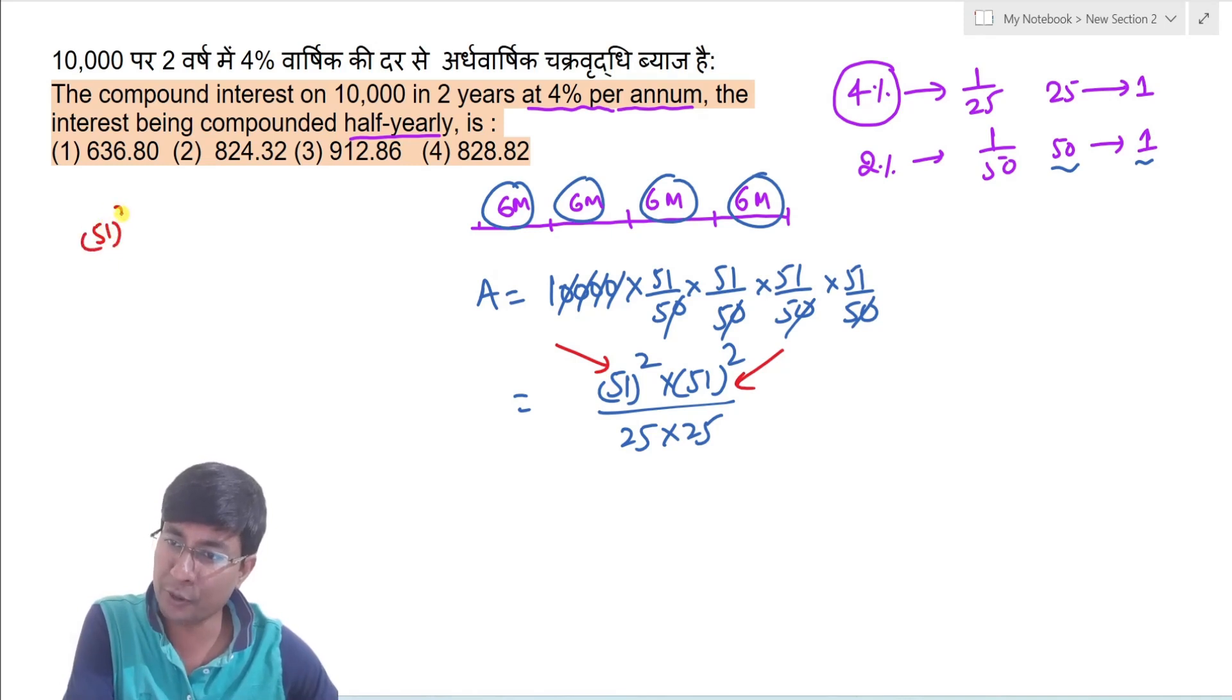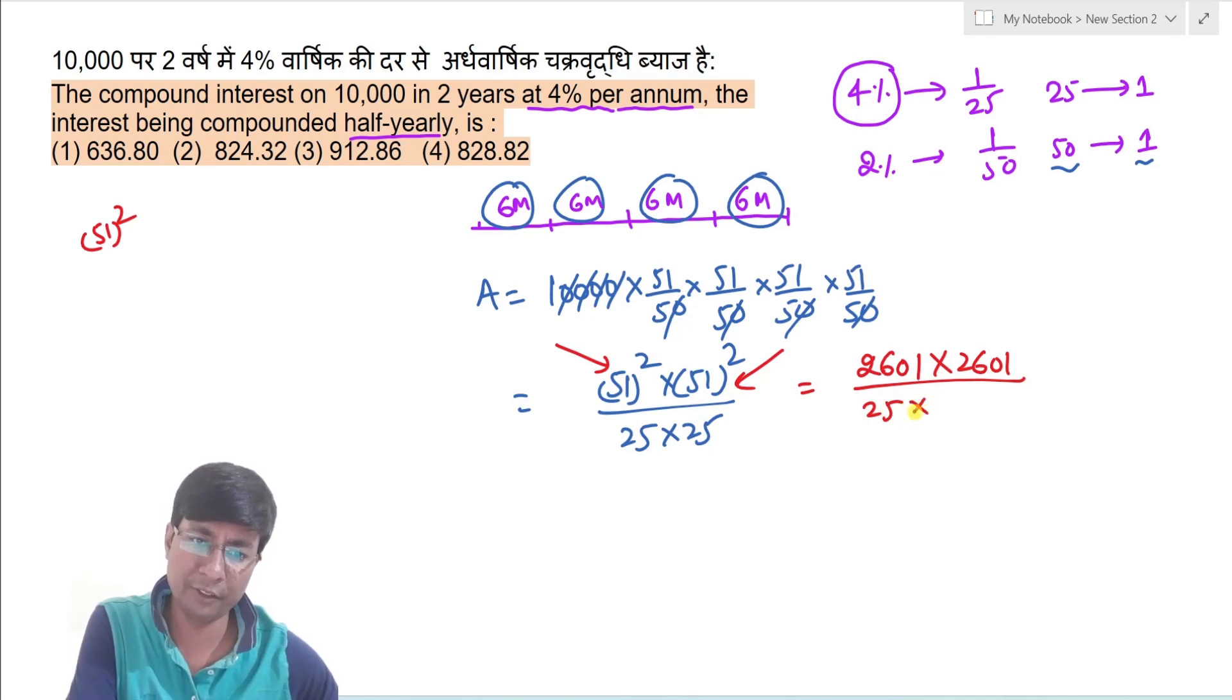Agar 51 ka square, mujhse poocha hai, toh main toh sidha straight away le dunga. Ye hoga two six zero one into two six zero one, divided by kya hoga, 25 into 25.